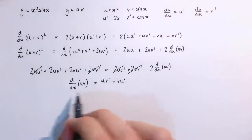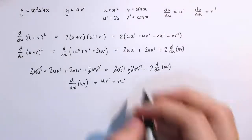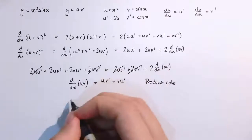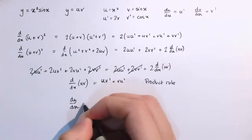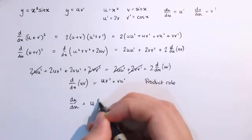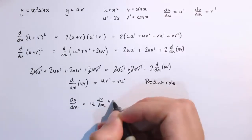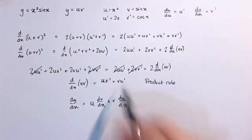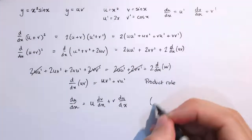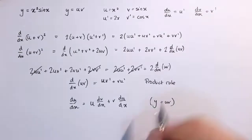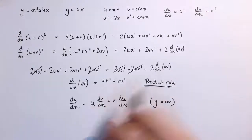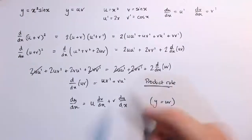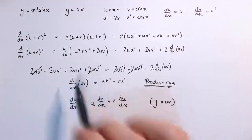We get d by dx of u times v equals u·v dashed plus v·u dashed — that is the product rule. You might also write this as dy by dx equals u times dv by dx plus v times du by dx, where y equals u times v. Either way, this is a statement of the product rule, and we've proved it using just the fact that the chain rule is true.